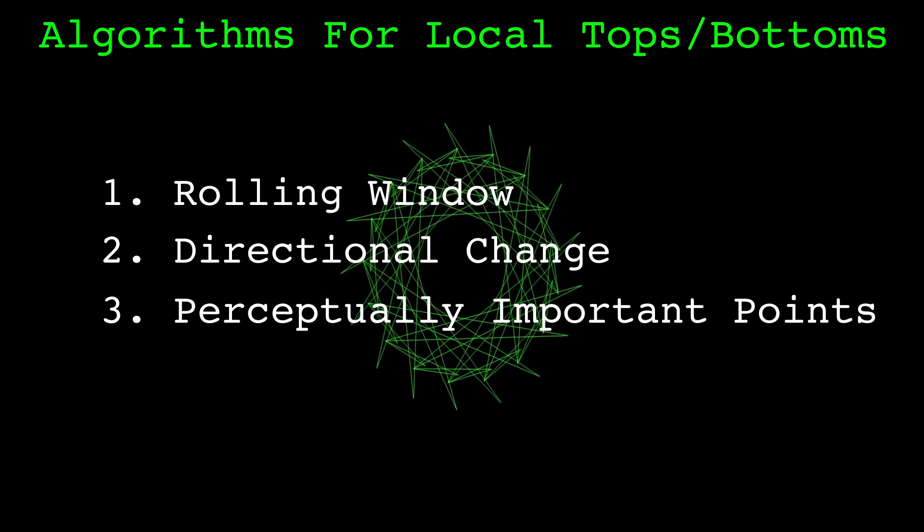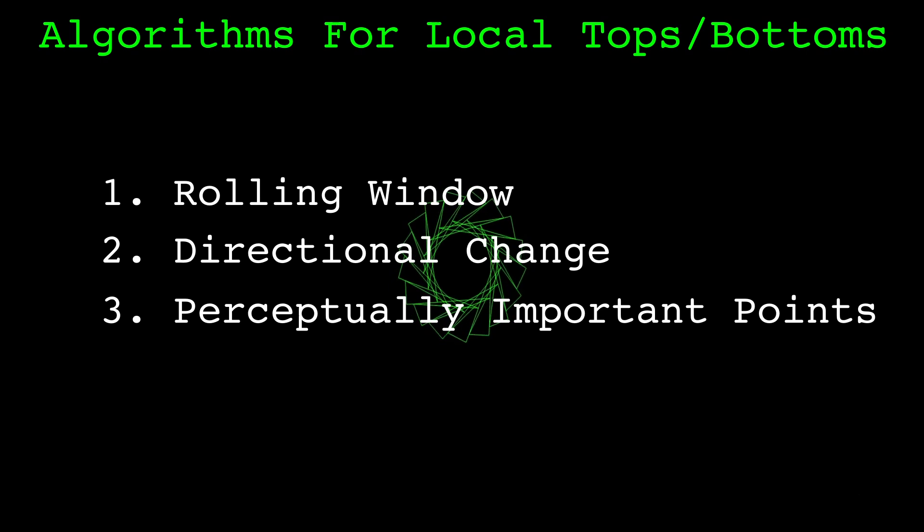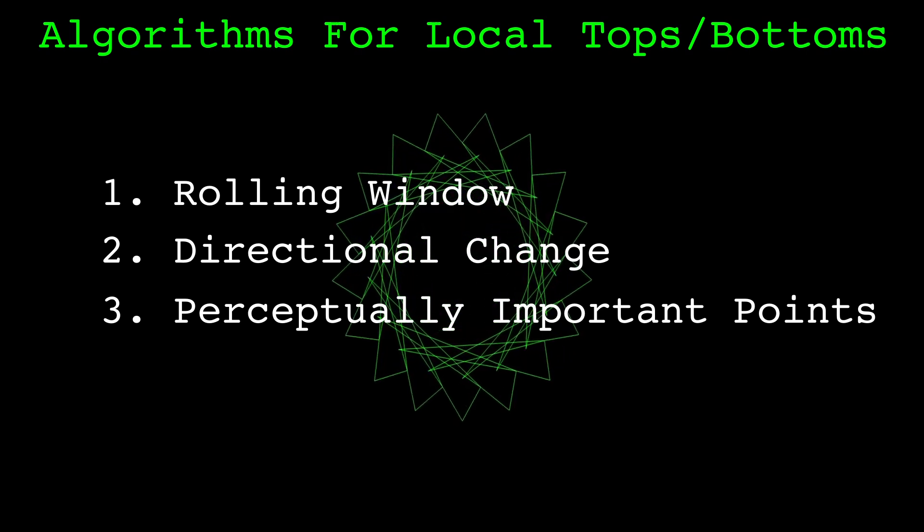I found all three useful for finding chart patterns, directional change is good for identifying support and resistance levels, and perceptually important points are particularly good for data mining novel patterns, with a body of literature behind it.